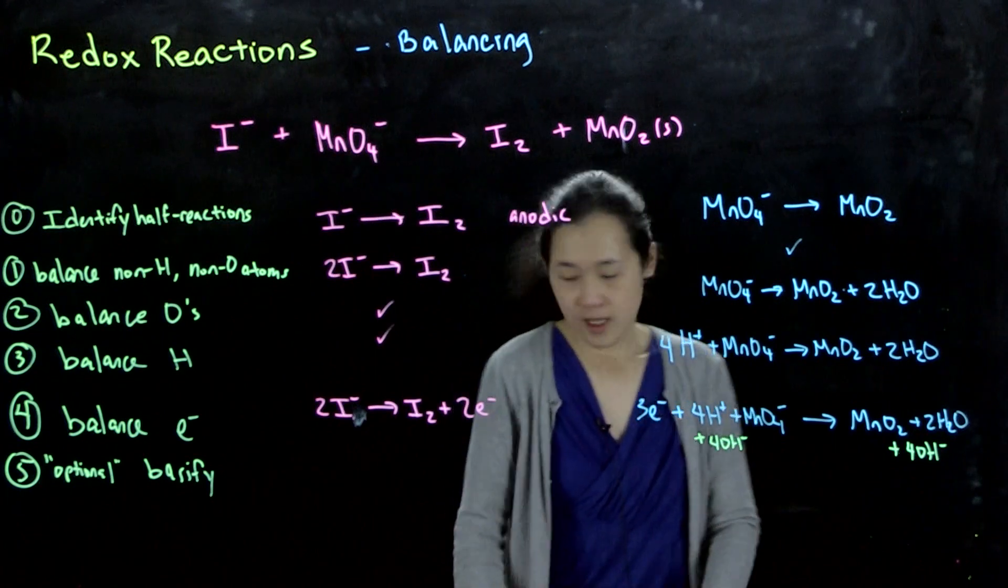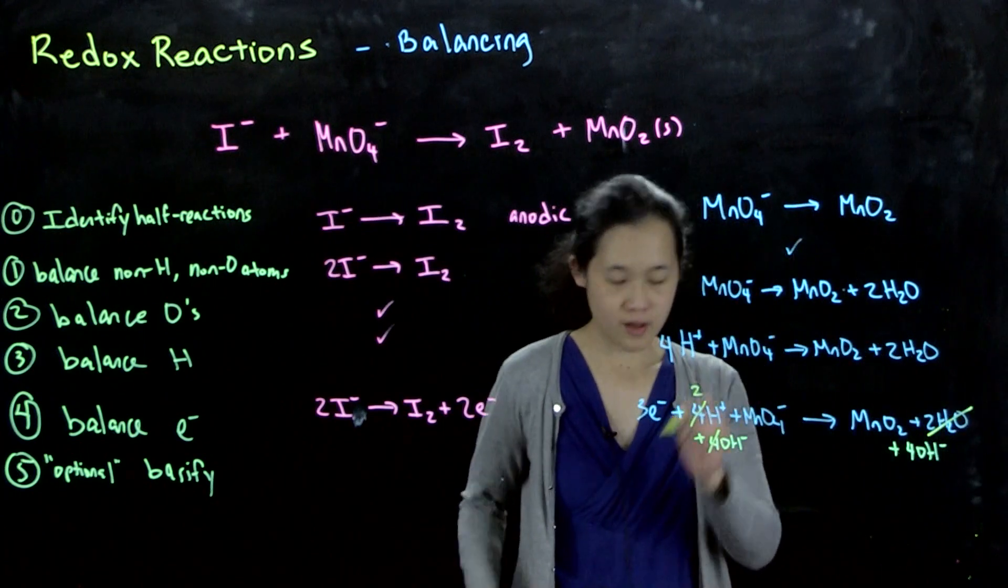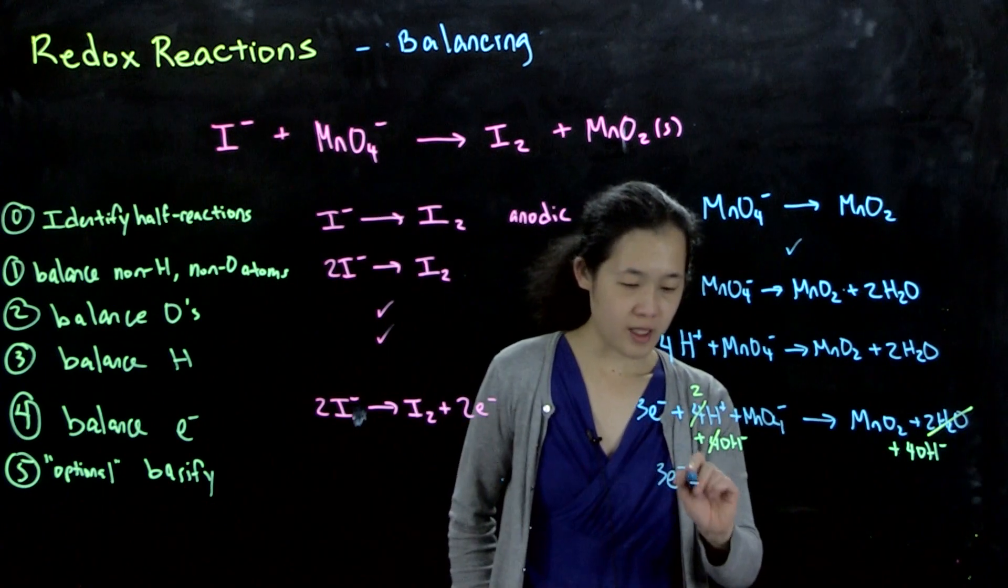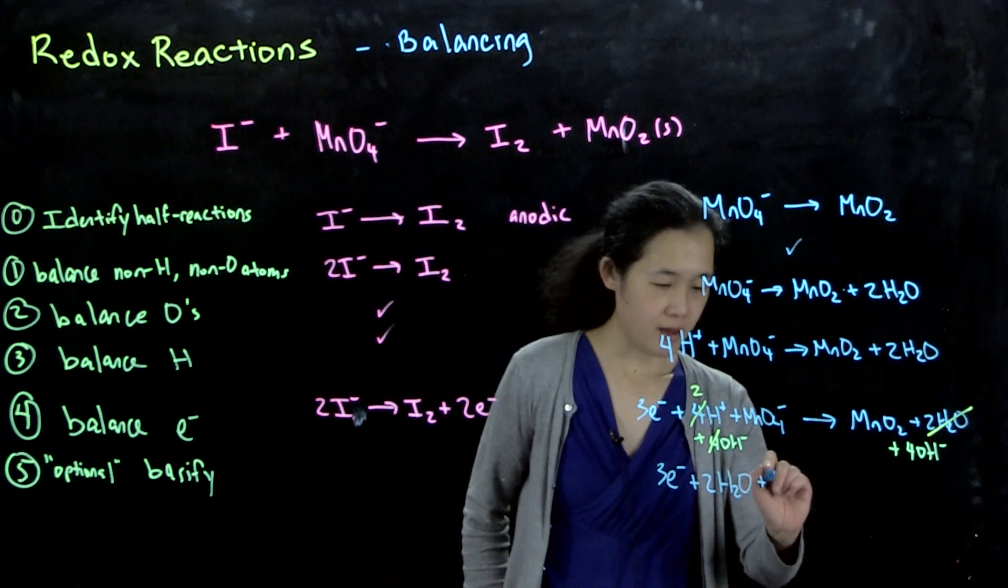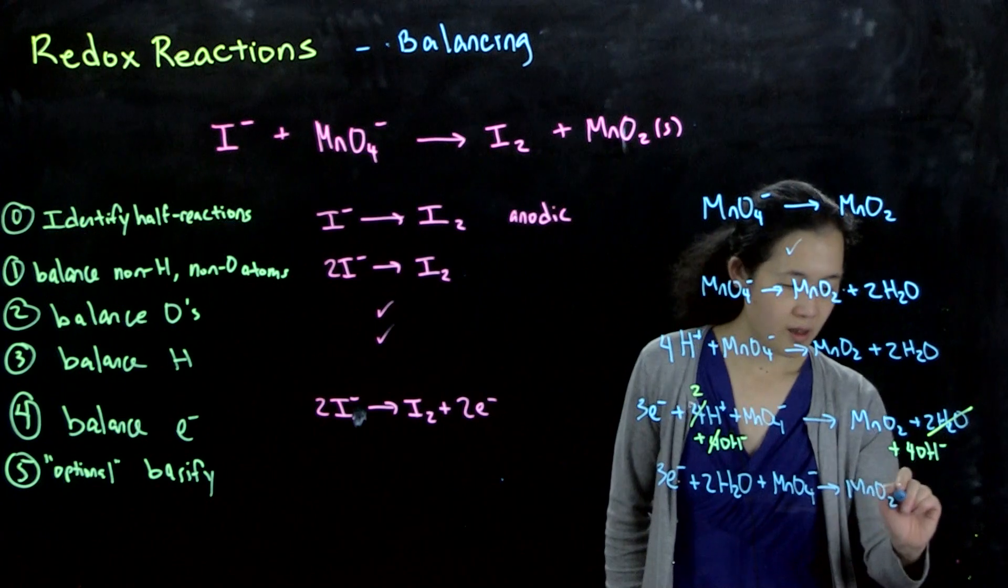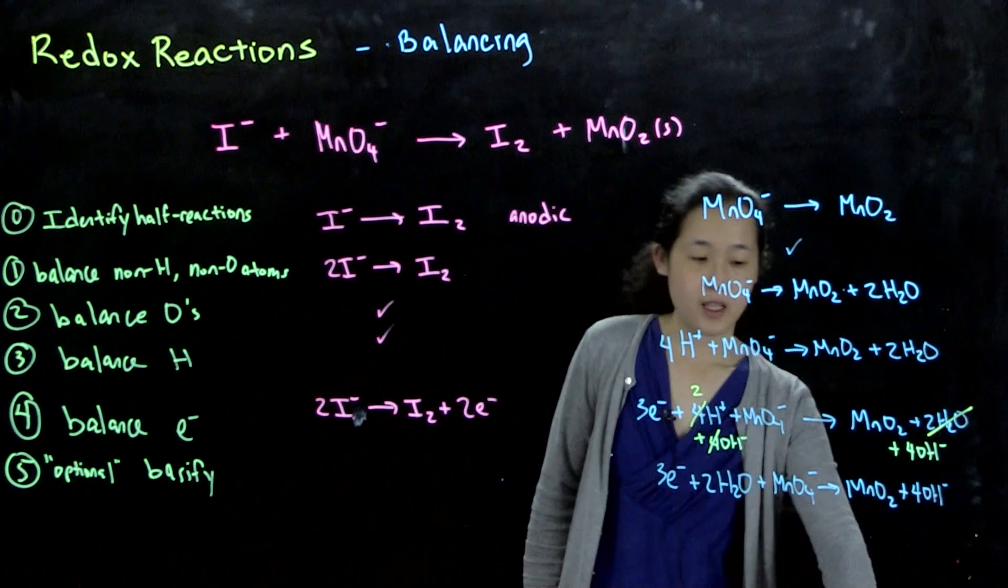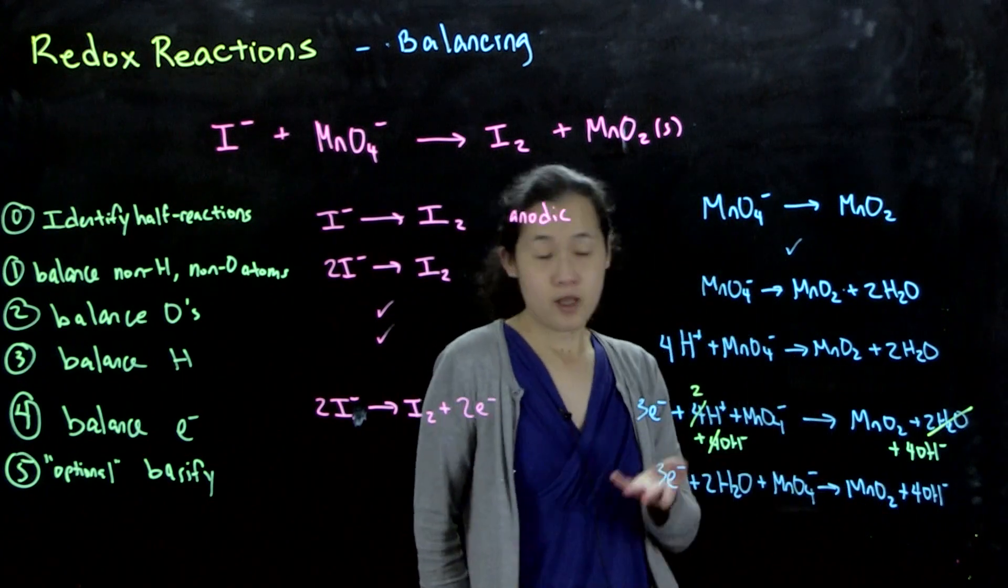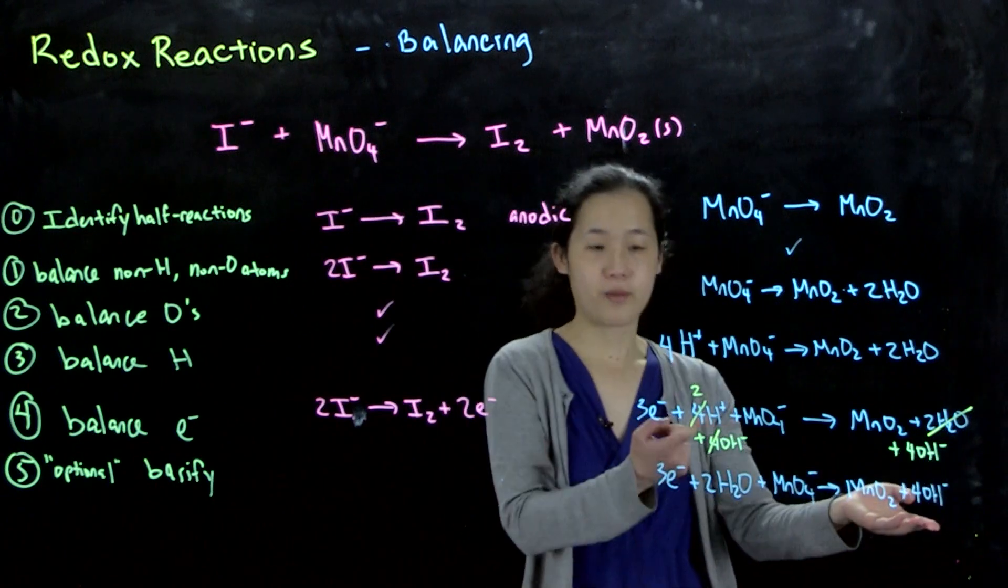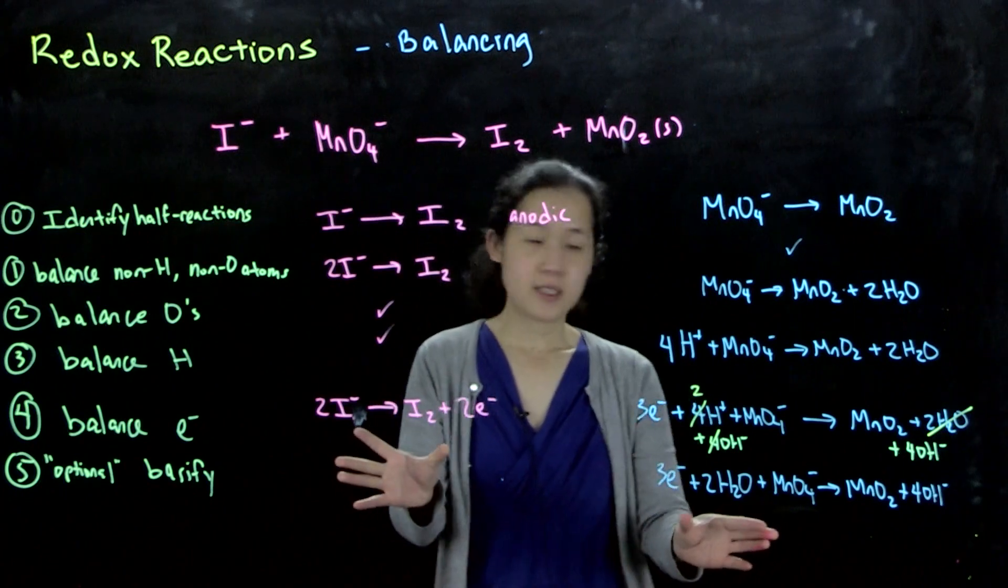When we try to eliminate that out, these two waters over here will cross out, and this four will cross out to two. So our final result should be: three electrons plus two waters plus permanganate gives us manganese oxide plus four hydroxide. So 3e⁻ + 2H₂O + MnO₄⁻ → MnO₂ + 4OH⁻. This step is optional if we're writing it at acidic pH, but if we're writing it in basic conditions, then we do this step to make sure that we have hydroxides rather than protons in our balanced reaction.